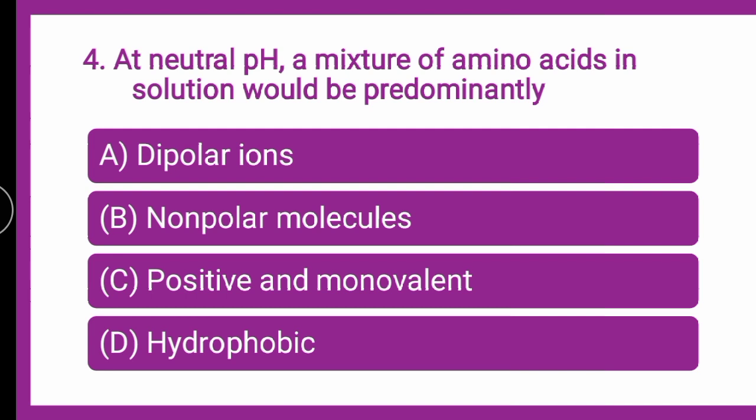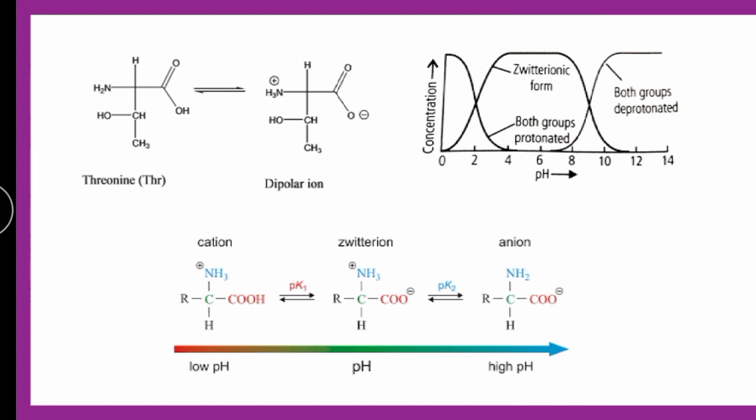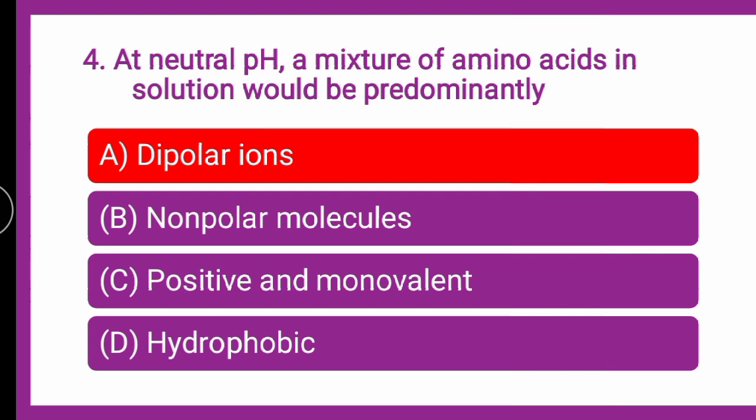Next question: at neutral pH, the mixture of amino acids in solution would be predominantly — whether they exist as dipolar ions, non-polar molecules, positive and monovalent, or hydrophobic. At low pH, the cationic form is predominant; at high pH, the anionic form is predominant; and at neutral pH, both positive and negative forms exist — that is, the zwitterion. So the correct answer is dipolar ions — two poles, positive and negative.